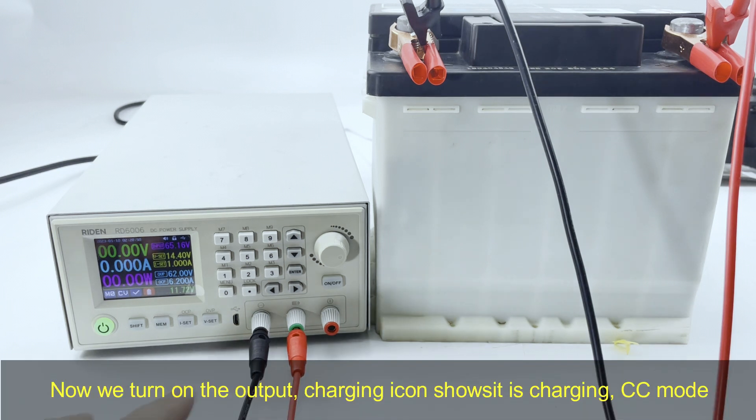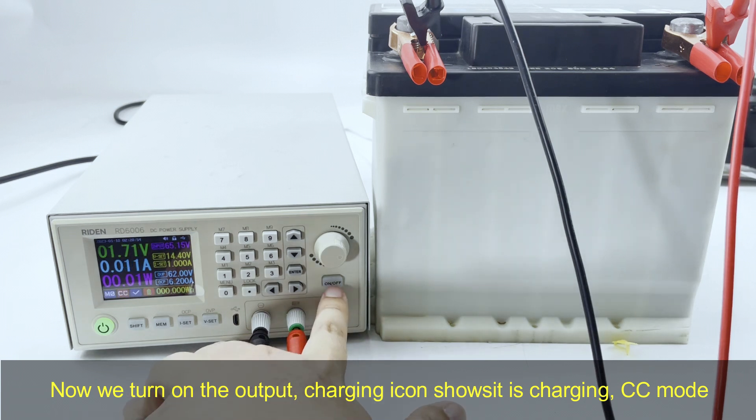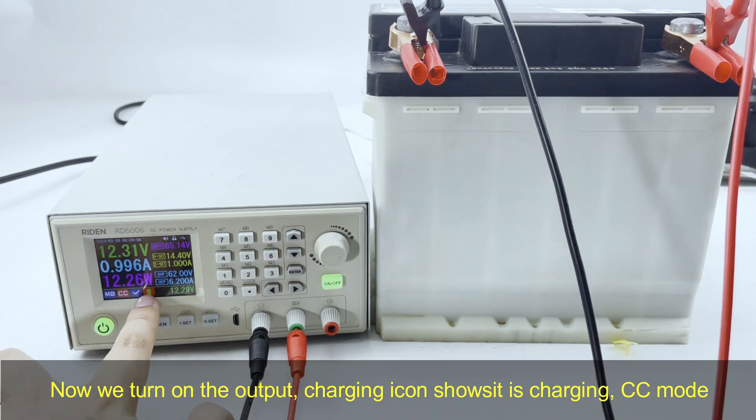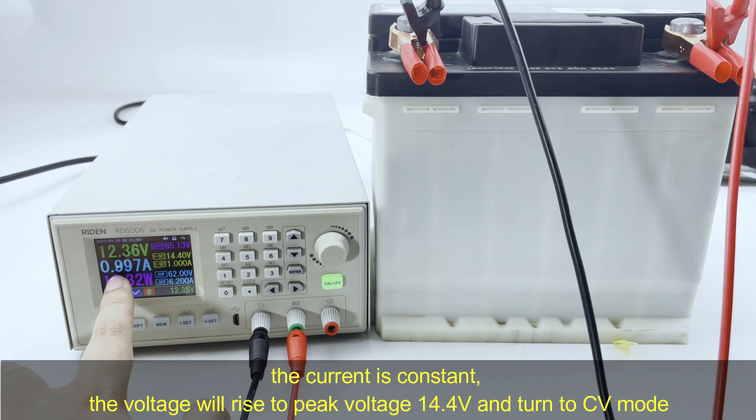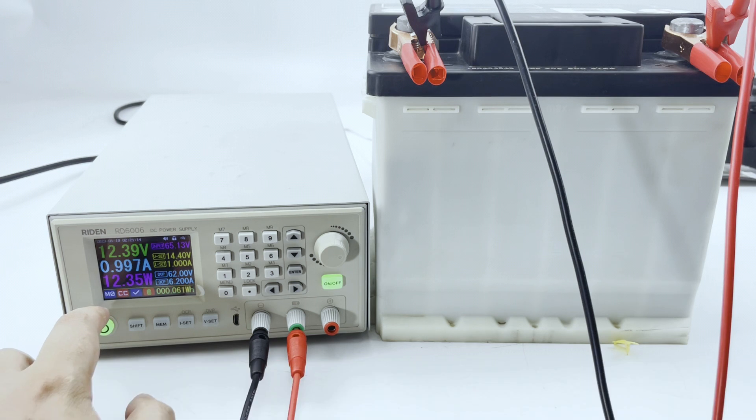Now, you can see we use the battery charging terminal and we turn on the output. The battery icon shows it is charging and it is CC mode. The current is constant.